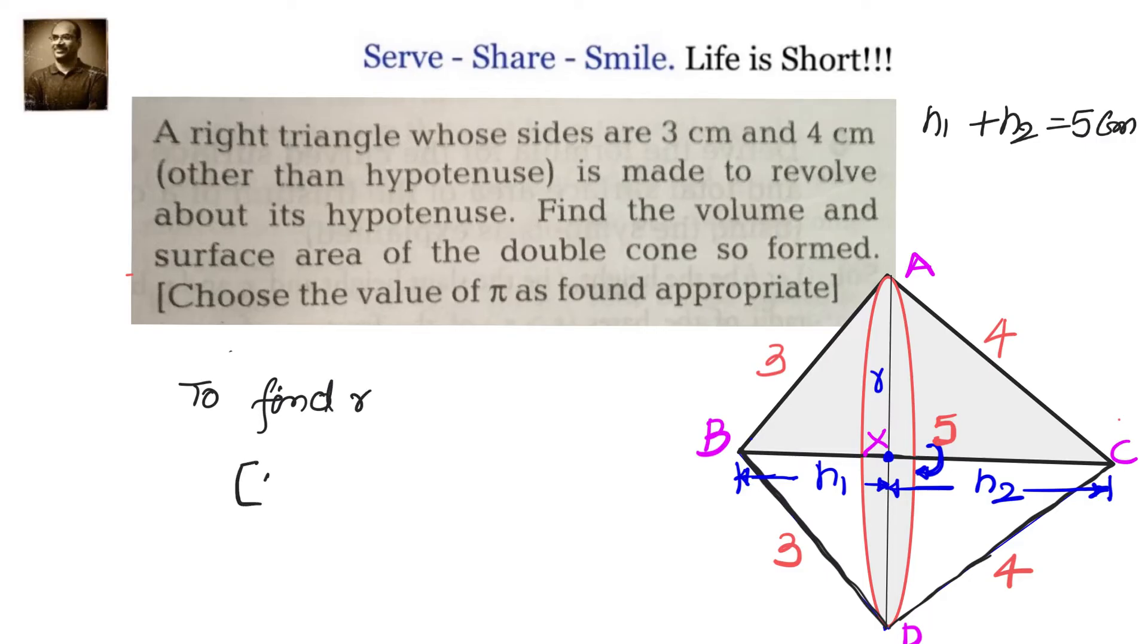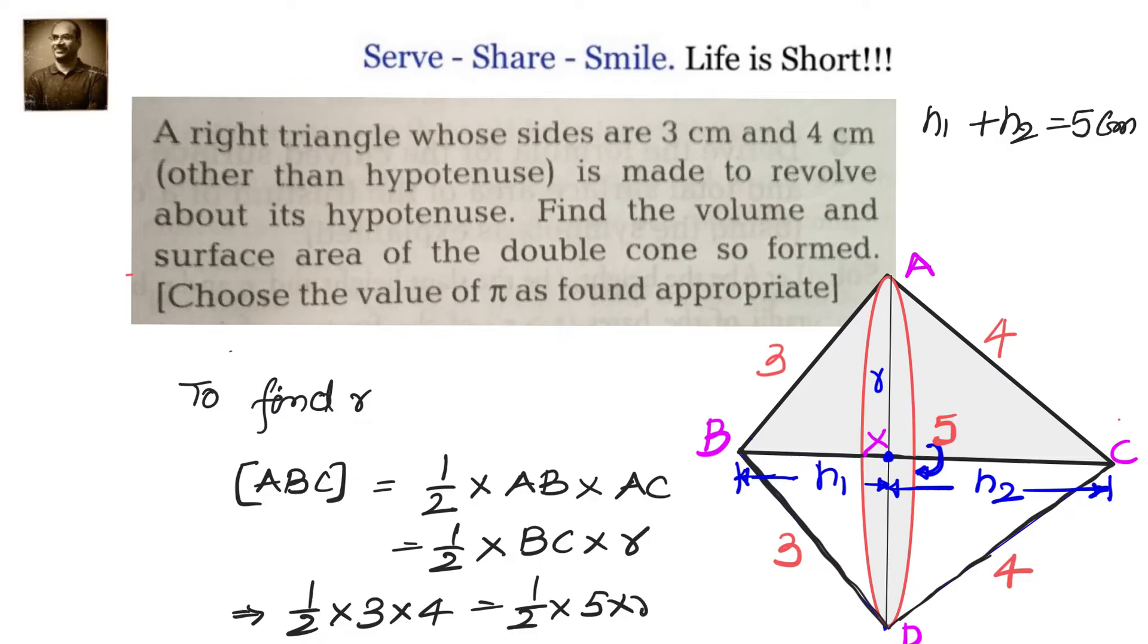We can calculate the value of r by similar triangles but here we will use basic concepts of area of a triangle is half into base into height. Let us say our base is AB then our height will be AC. We know that because the angle between AB and AC is 90 degrees. Also if I take the base as BC then my altitude will be nothing but r. Since we know the values let us go ahead and substitute. We have ½ × 3 × 4 = ½ × 5 × r. Simplifying we will get r = 2.4.